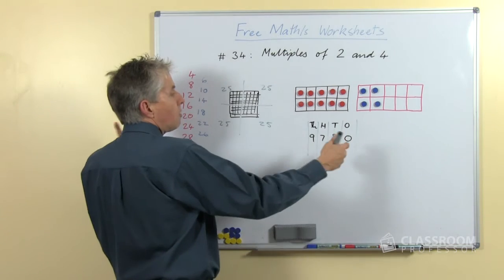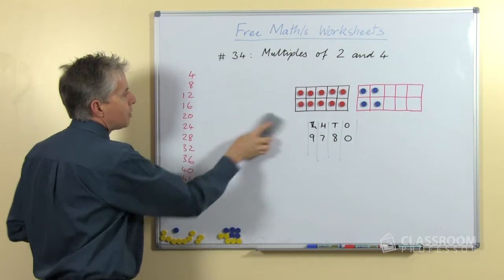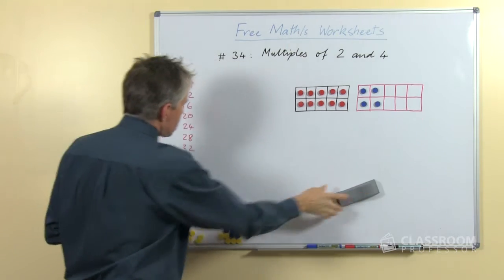So we can have a very, very long number and all we have to look at is the last 2 digits. Now that in itself is a bit of a challenge, so let's spend a bit of time looking at that.